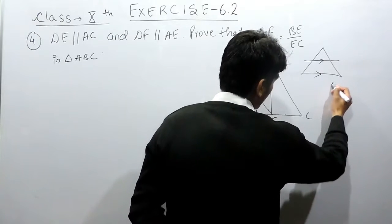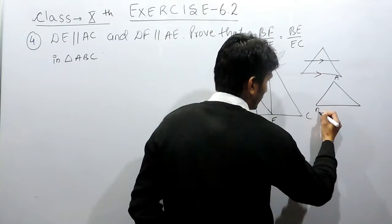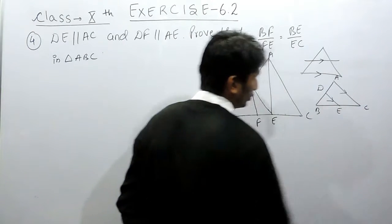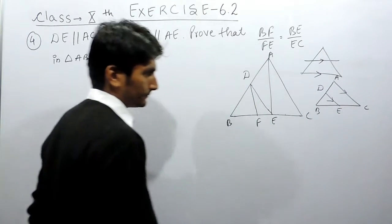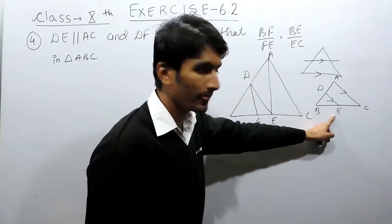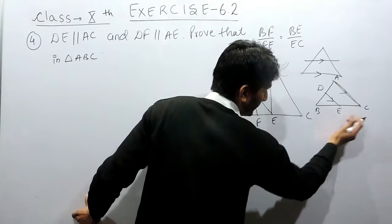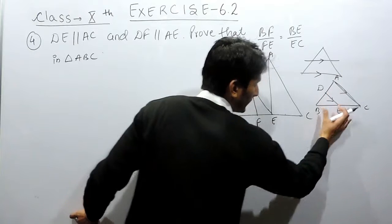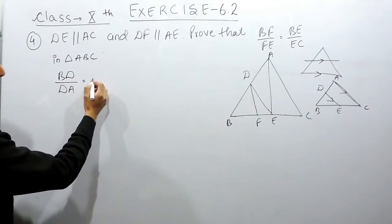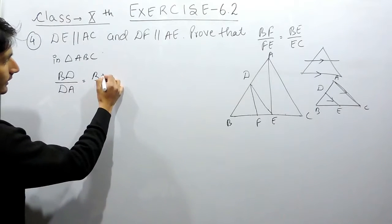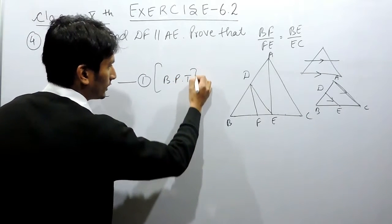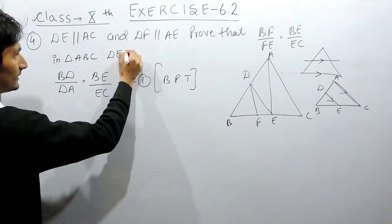Here, if I draw triangle ABC — this is A, this is B, and this is C — and DE is given parallel to AC. So this figure matches our setup. Since DE is parallel to AC, it must divide the two sides in equal ratio. So we can say that BD upon DA must be equal to BE upon EC. This is our first equation, because of the Basic Proportionality Theorem applied in triangle ABC where DE is parallel to AC.